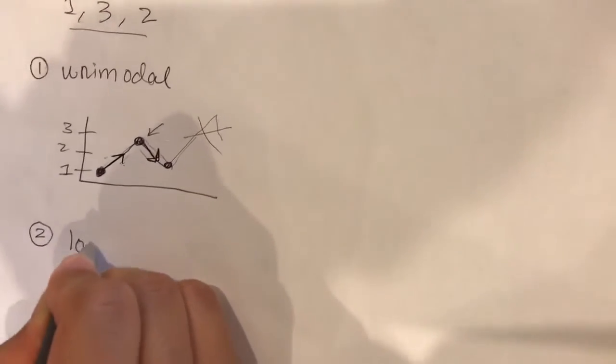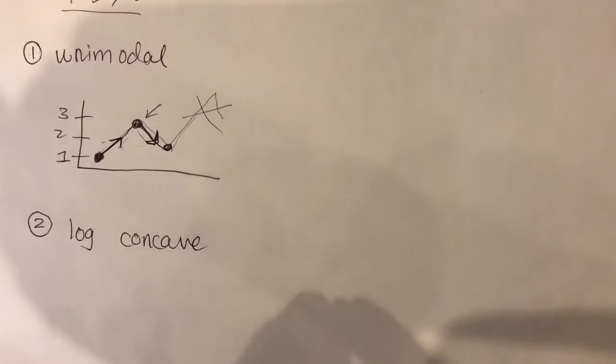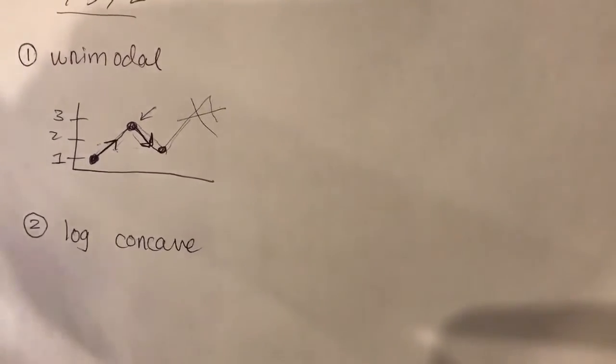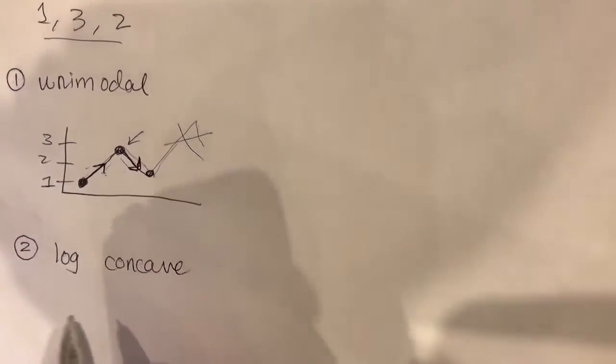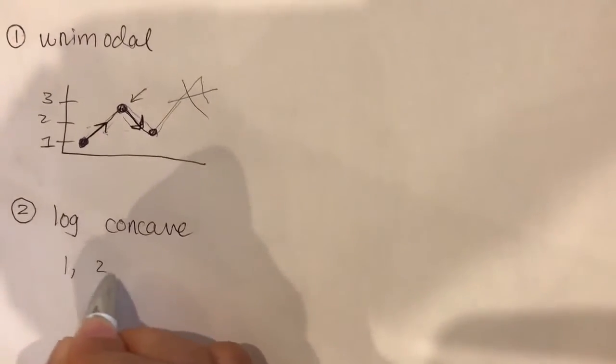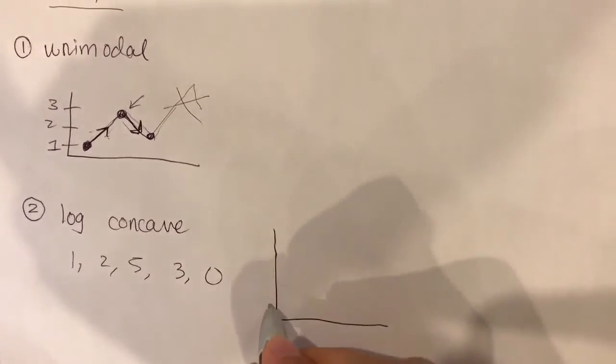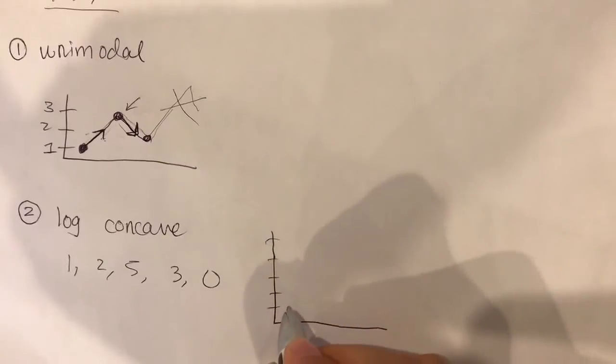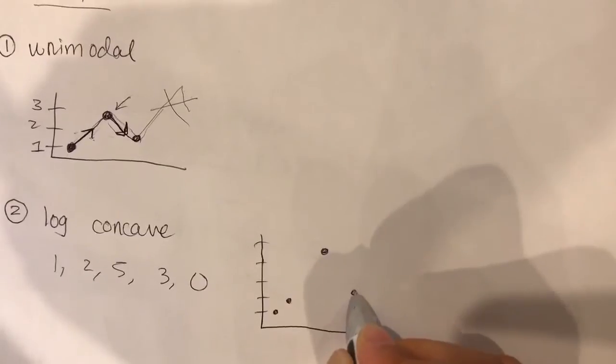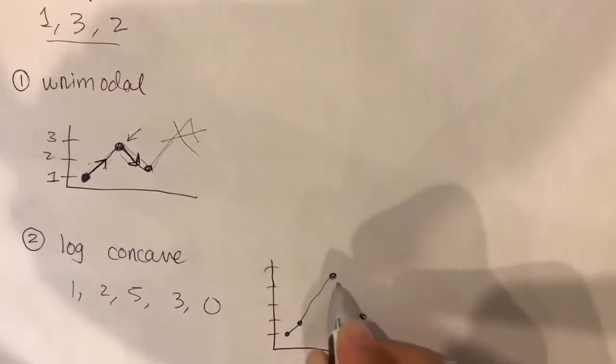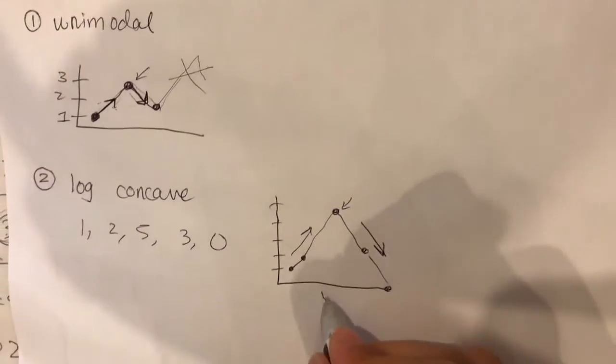The second thing is, it is log concave. That's its second special property. Now what does it mean to be log concave? Well, it means if we take the sequence, let's say we have a sequence of 1, 2, 5, 3, 0. It looks something like this: 1, then 2, then 5, then 3, then 0. So this is also unimodal. It peaks only once, and before it's always increasing, and after it's always decreasing.